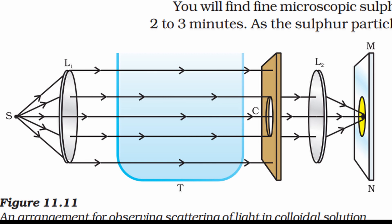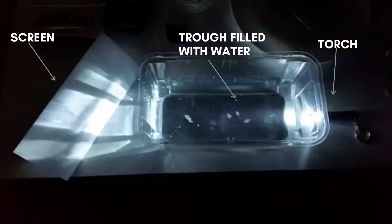So we start the activity. We don't use lenses. We direct our torch on the trough. We have filled the water in the trough and we are seeing that we are not seeing the path of water.